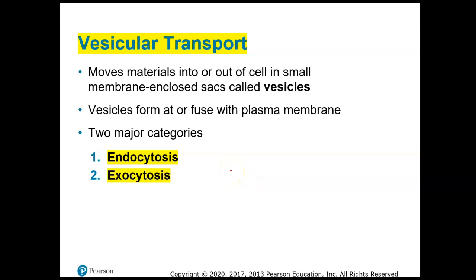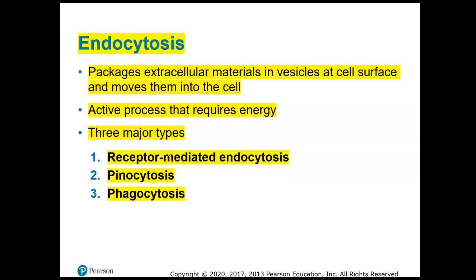Vesicular transport is bulk transport — it moves a large amount of material. Vesicular transport includes either endocytosis or exocytosis. Endocytosis is when a large amount of material is moved by a vesicle into the cell. There are three types of endocytosis, and all endocytosis and exocytosis requires energy.